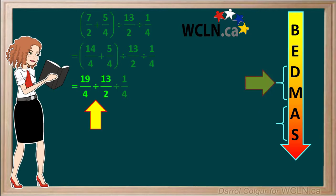The first operation here is 19 over 4 divided by 13 over 2. Dividing by a fraction is the same as multiplying by its reciprocal. So this becomes 19 over 4 times 2 over 13. The diagonals 2 and 4 can each be divided by 2 to give us 1 and 2.